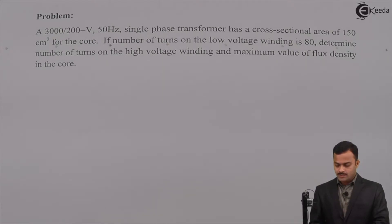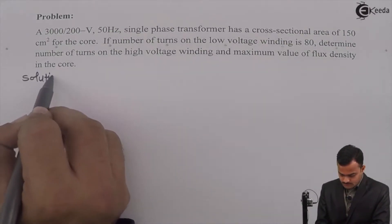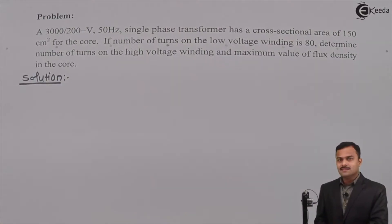If number of turns on the low voltage winding is 80, determine number of turns on the high voltage winding and maximum value of the flux density in the core. So let's solve. Let's list out the things given.